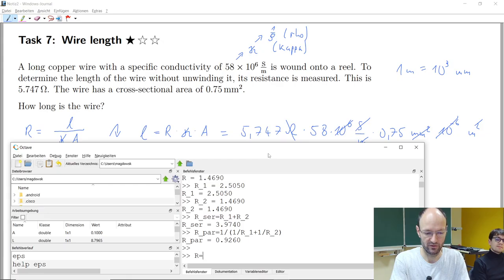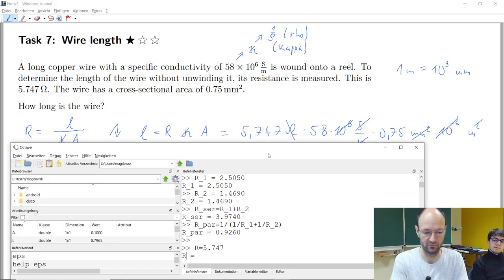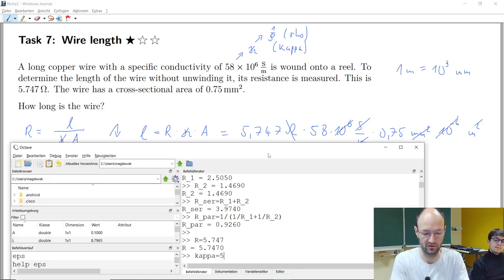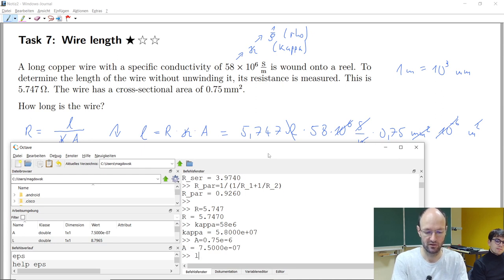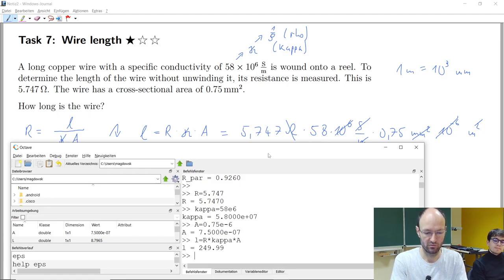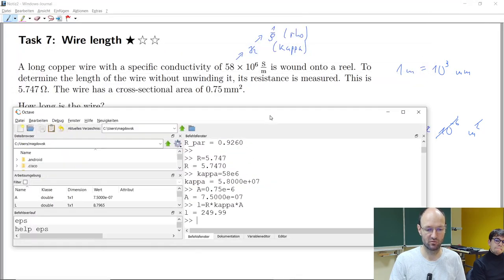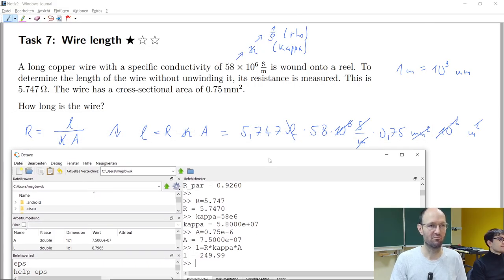So, if we say the resistance is 5.747, the conductivity is 58E6 and the cross-sectional area is 0.75, 10 to the power of minus 6. Then we can just take the product of all these values and we end up with the length of 250 meters, which might make sense.